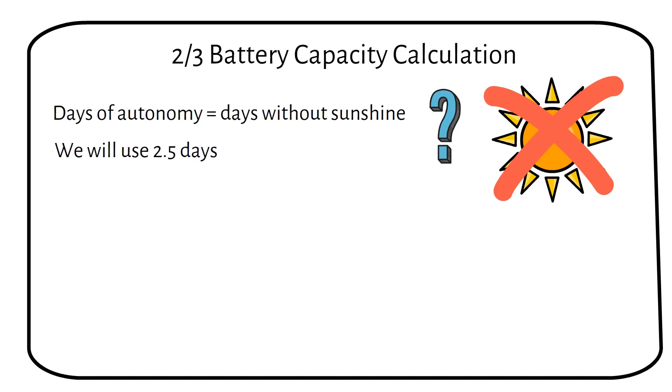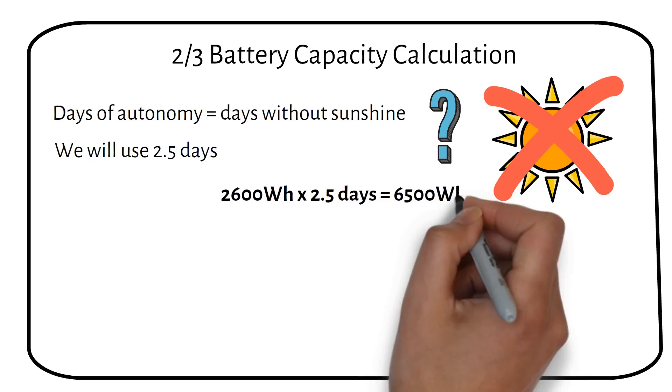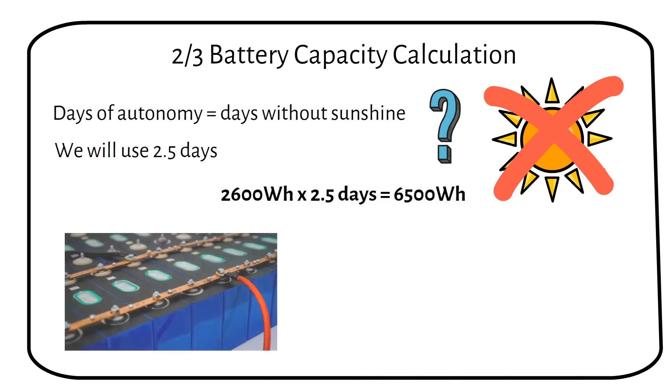Remember, we had a total of 2600 watt hours per day. So if we multiply by 2.5, we become 6500 watt hours.